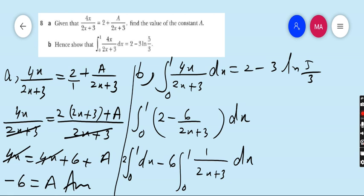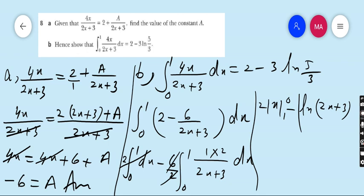The derivative of 2x plus 3 is 2, so write 2 in numerator, divide by 2. Hence, 2 dx integration is x, limit 0 to 1, minus 2 times 3 is 6, so minus 3 ln (2x plus 3), limit from 0 to 1.